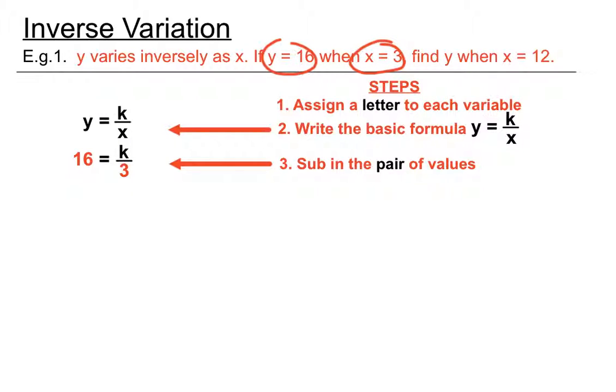To get k on its own, I'm going to be multiplying by 3 on both sides. The 3 that's dividing and the 3 that's multiplying will cancel each other out, leaving k on its own. 16 times 3 gives us k equals 48.